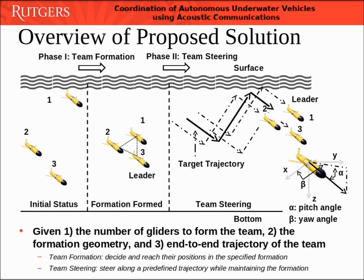This figure shows an overview of our proposed solution. Basically, two phases of operations are required to coordinate the gliders. During phase 1, the phase for team formation, gliders that are scattered in a region need to move to the specified geometry formation locations without colliding with each other. After this, for phase 2, the team needs to steer through the 3D region of interest along the plan trajectory while maintaining the formation. The glider that surfaces last and obtains the latest GPS location is selected as the team leader, while the other gliders act as followers.